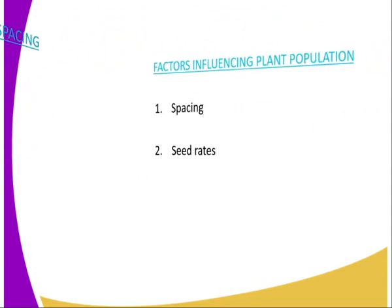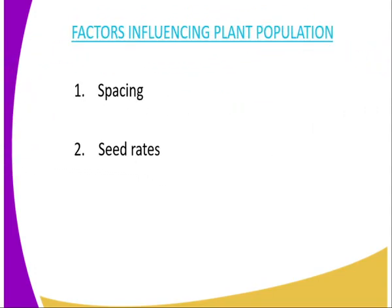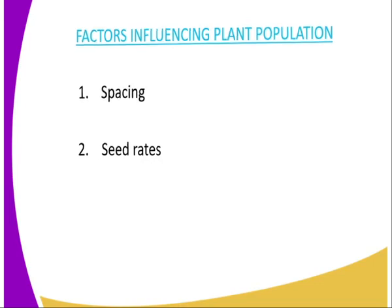Then we have factors influencing the plant population. The first one is spacing — the distance between one plant to the next, and also between the rows in which the plants are grown. The second factor is seed rate, which has already been defined.